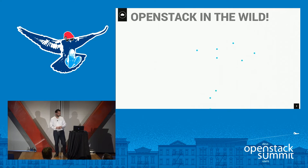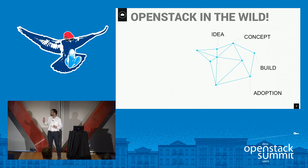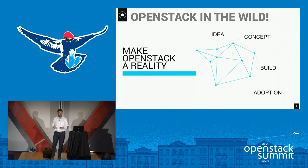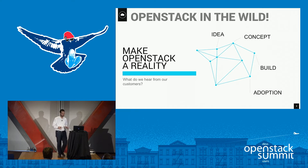First, let's talk about the four phases of OpenStack adoption within the enterprise. We think this generally starts with an idea within the enterprise. It then moves into a proof of concept. Then you're actually building for production. And then the fourth and most important step is driving adoption.